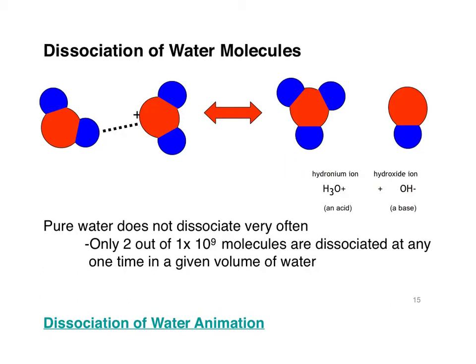H+ plus OH- will of course form water, which is why we have water here — that water molecule dissociated. In this diagram, you're seeing the proton jump from one water molecule to another to form hydronium and the leftover OH-. Again, water dissociates very, very infrequently.